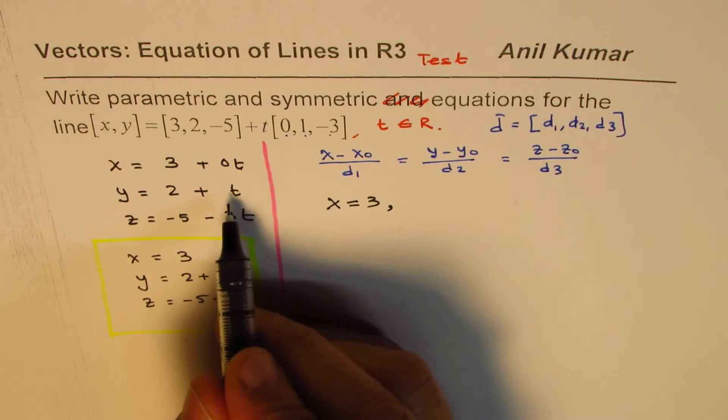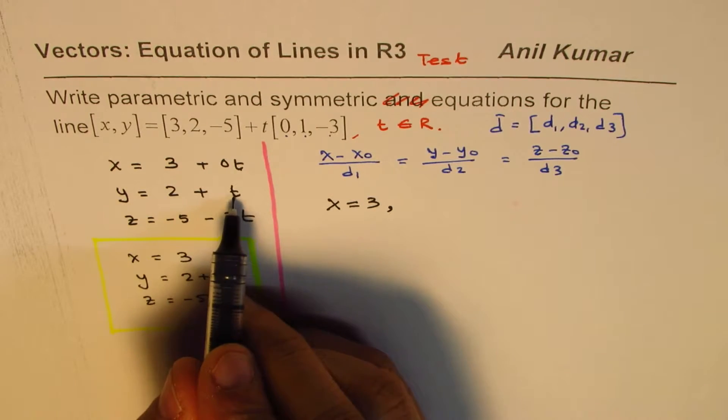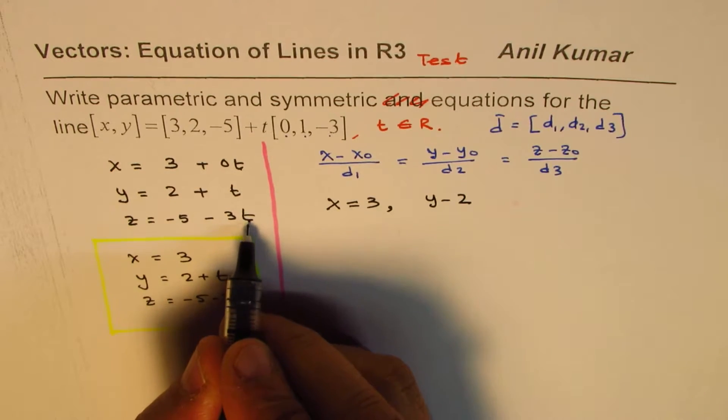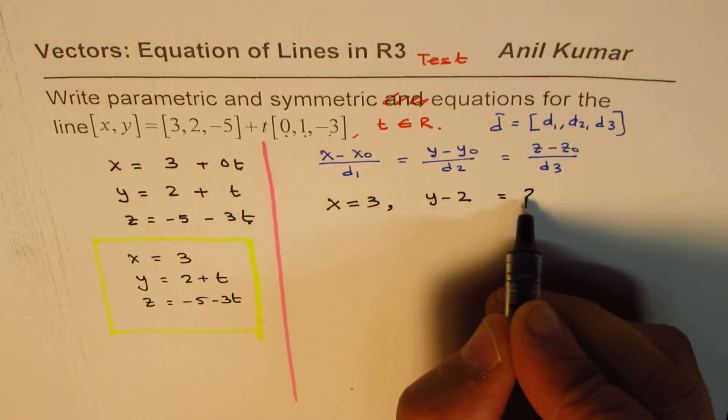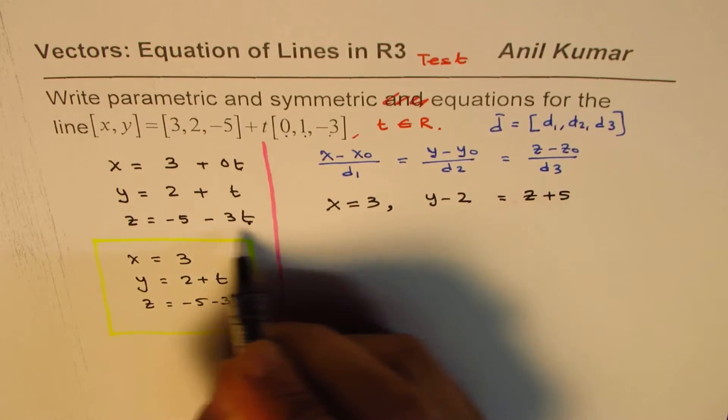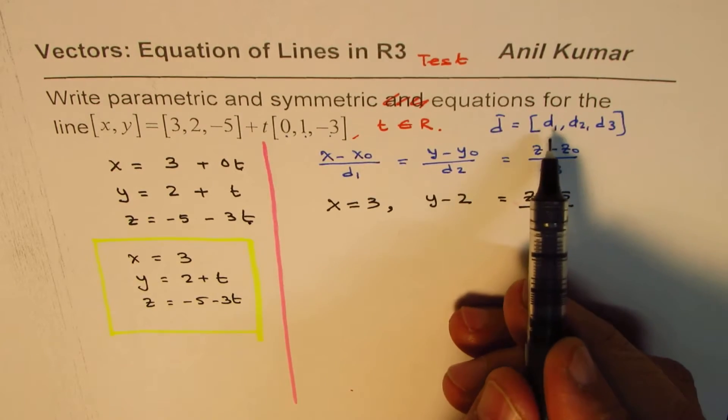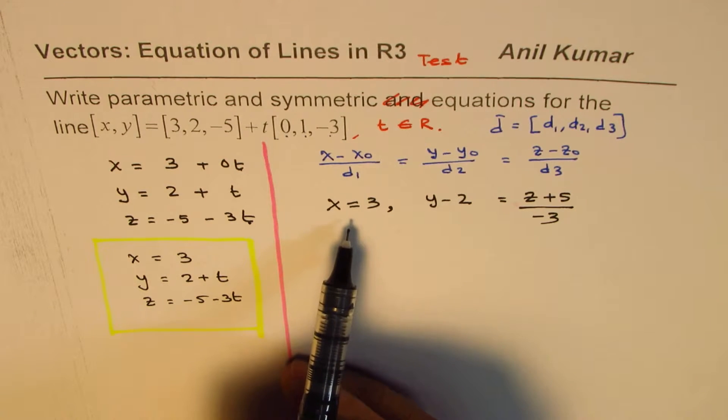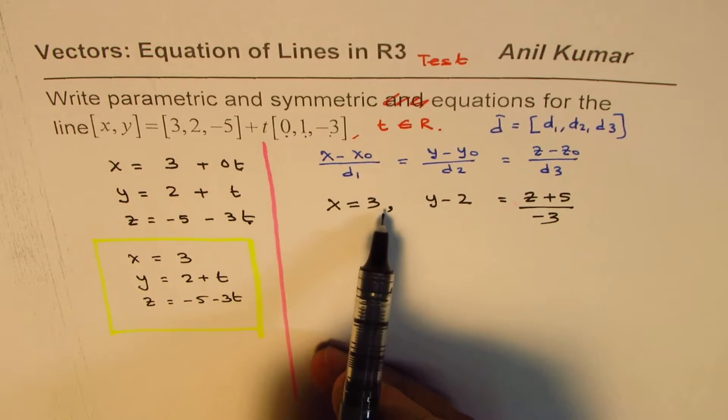For the others, they are dependent on t, so you can isolate. So for y, we get t as y minus 2. And if you isolate t from here, you get this equals to z plus 5 divided by minus 3. So that confirms to our equation. So this is 0, since you cannot divide by 0, you don't have to also, since x value is always 3. So let's write x equals to 3.